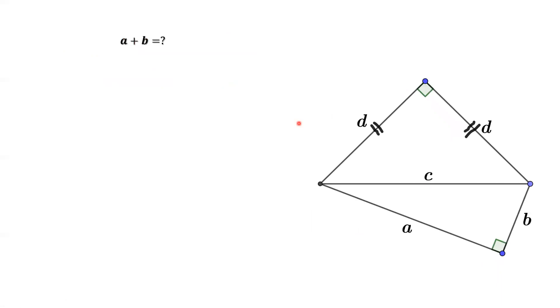First of all, we construct two right triangles. Link this point to this point. Mark this side as c. Then we have two right triangles: the top right triangle and the bottom triangle.